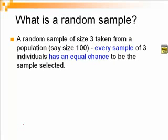A random sample of size 3, taken from a population, say size 100, means every sample of 3 individuals has an equal chance to be the sample selected.